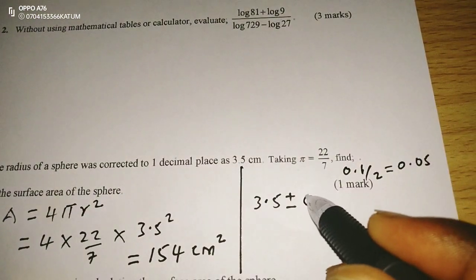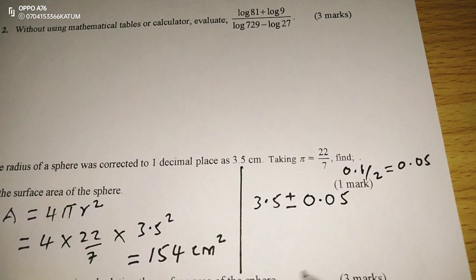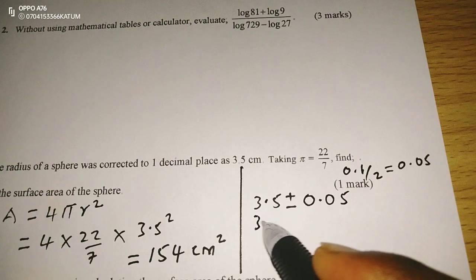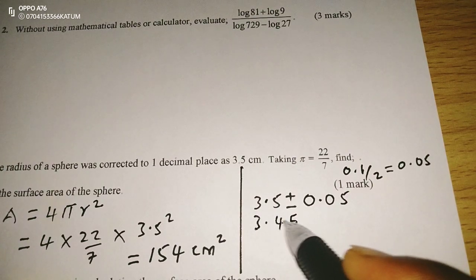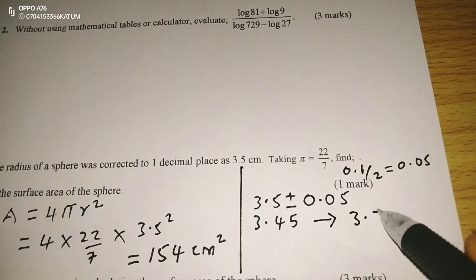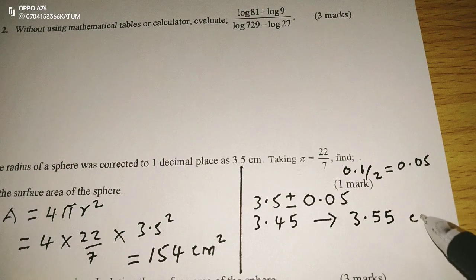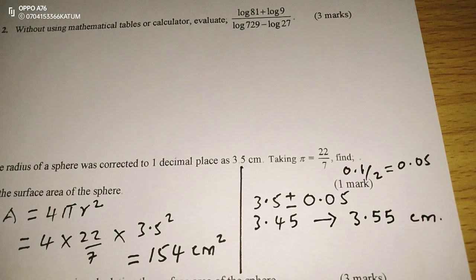So we need to subtract or add 0.05 to this value to get the range of the radius. And this is going to be 3.45 up to 3.55 centimeters. So this is the range of the radius.